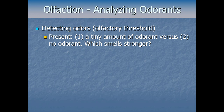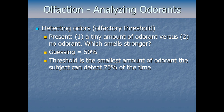With a tiny amount of odorant, the subject may not detect it at all — basically a 50% chance of guessing right. With a large obvious amount, they'll always choose correctly. Since chance is 50% between two test tubes, we define the absolute threshold as 75% — the point halfway between not detecting it at all and always getting it right, where they're unsure but performing better than chance.